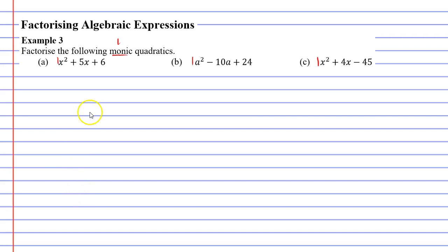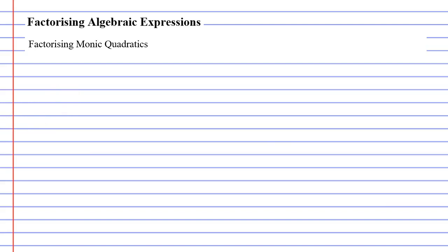In order to explain how to factorize monic quadratics, we need to go back a step to where we learned to expand, giving a result that was a monic quadratic. So what's a good example of this? Well, let's start with expanding x plus 3 and x plus 4.